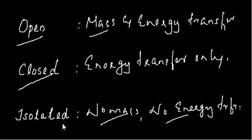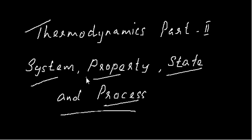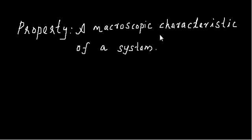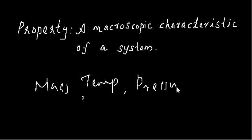Systems always undergo changes, so how do we define the change of a system? To define the state change of a system, we need to define the state of a system. Here, properties come in — you use a property to define the state of a system. A property is a macroscopic characteristic of a system, such as mass, temperature, pressure, etc. A property can be assigned a numerical value at any given point in time.